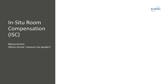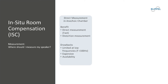A direct measurement in the anechoic chamber is fast, and we can measure the linear as well as the non-linear characteristics. However, no anechoic room is perfect. Below the cutoff frequency, typically below 100 Hz, the accuracy of these measurements is limited. Also, the costs and the availability of an anechoic room are an issue.